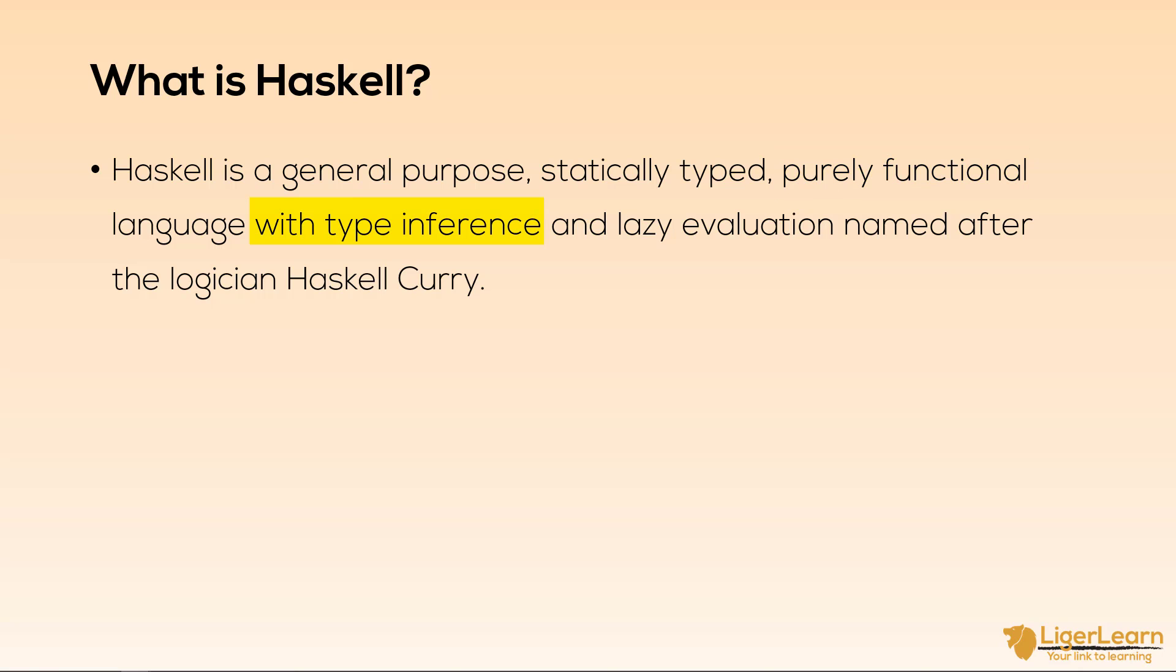With type inference. This refers to the fact that the programmer does not always have to declare the types of variables and functions in the code. The compiler is smart enough that it can usually figure it out for us. We will see this in action in later places in the course.